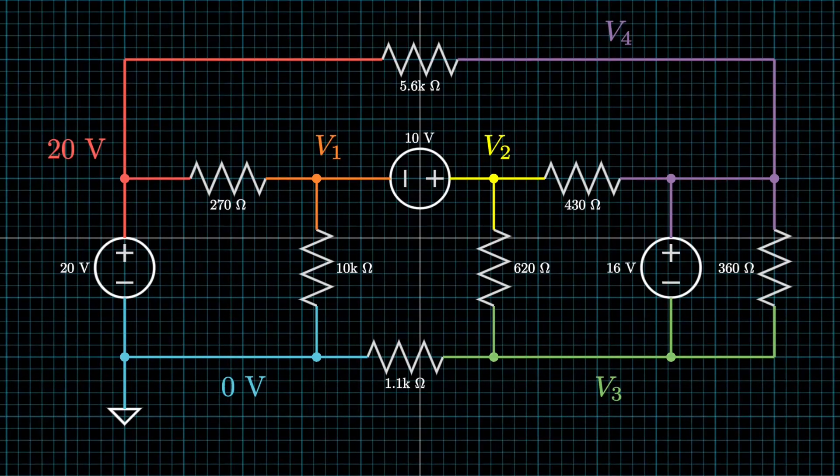Now let's take a look at this 10 volt voltage source. It's connected to V1 and connected to V2, neither of which we know the voltages of relative to ground. This is when we have to use a supernode. Whenever you have a voltage source that is connected on both ends to voltages of unknown voltage, that is when we have to use a supernode.